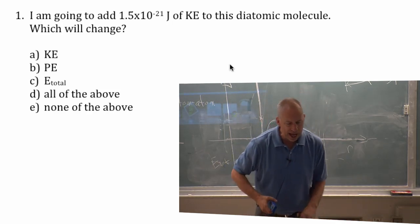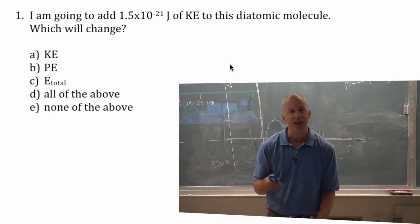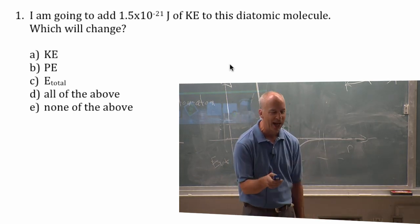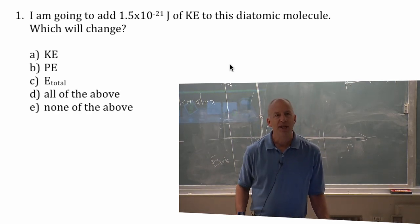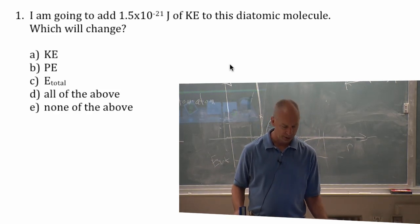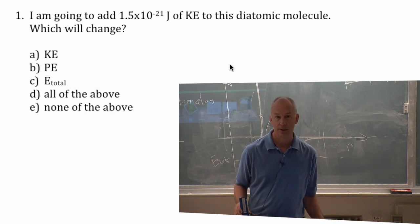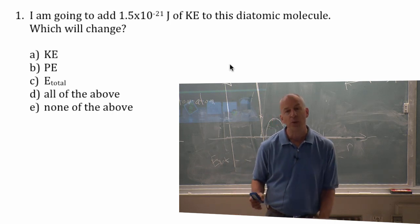And I haven't phrased it exactly right. The question's fine, but the answer is I haven't phrased exactly right. I'm going to add 1.5 times 10 to the minus 21 joules of kinetic energy. Which will change?